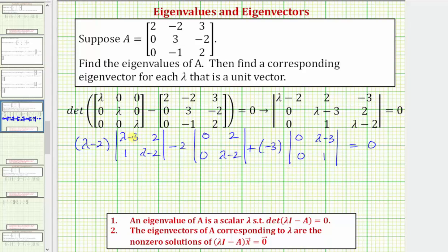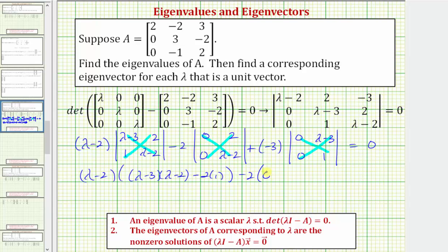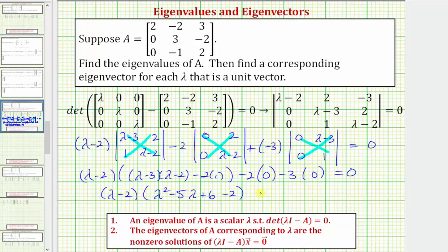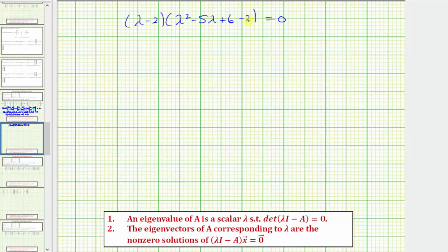The value of each two by two determinant is equal to this product minus this product. So we have the quantity lambda minus two, times the quantity lambda minus three, times the quantity lambda minus two, minus two times one. Then we have minus two times zero minus zero, which is zero. This will be minus three times zero minus zero, which is also zero. So we have the quantity lambda minus two times lambda squared minus two lambda minus three lambda — that's minus five lambda — plus six, but then we have minus two, and the other terms are zero, so this product equals zero. Continuing, six minus two is four.